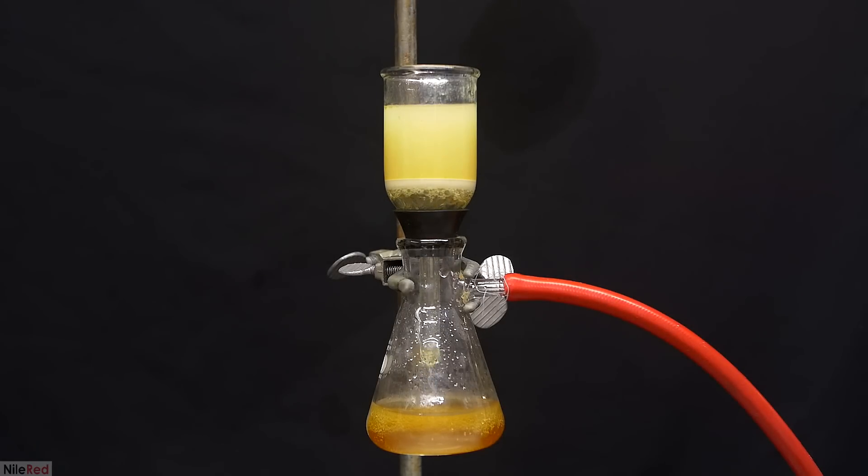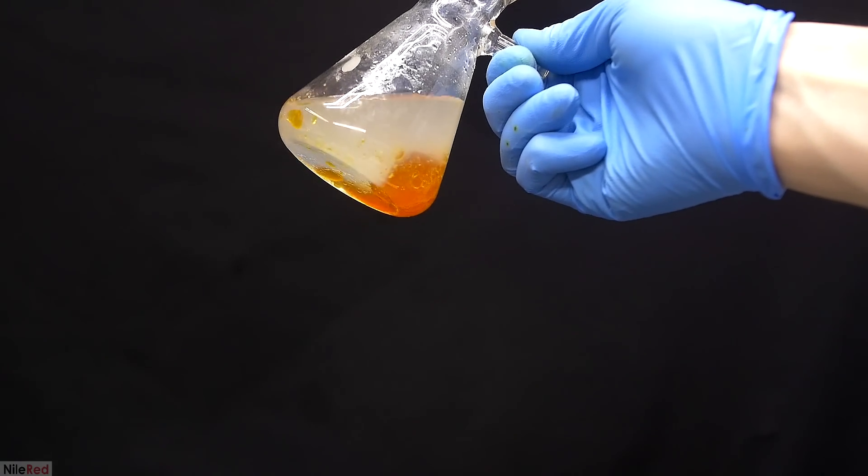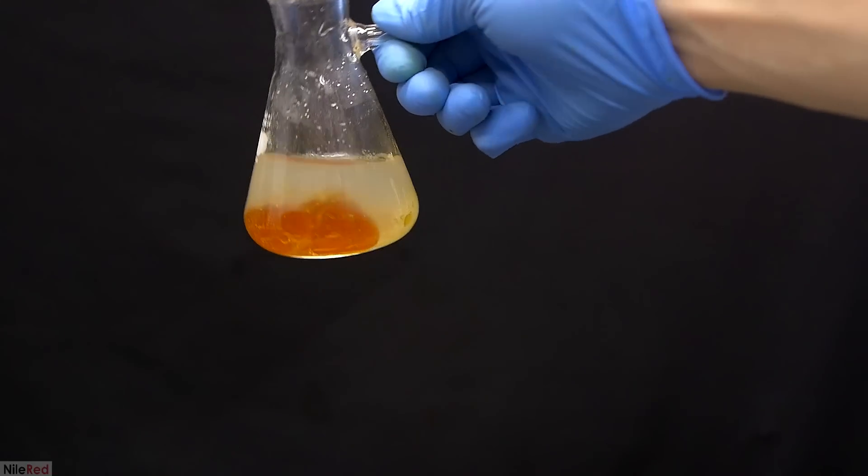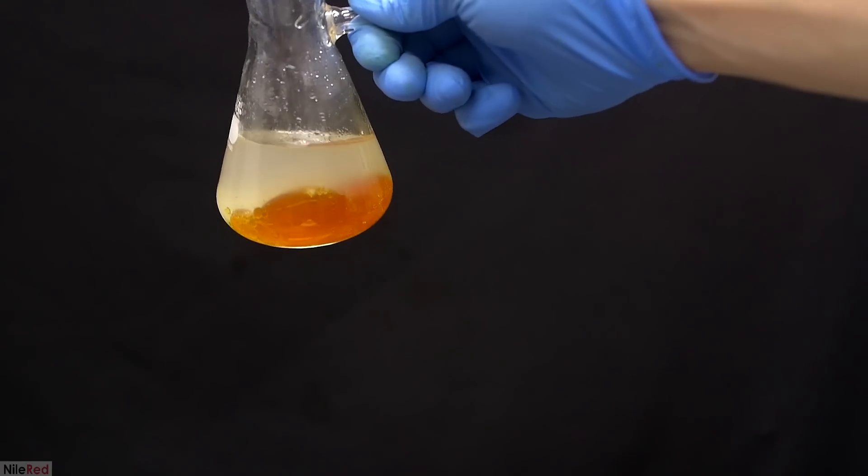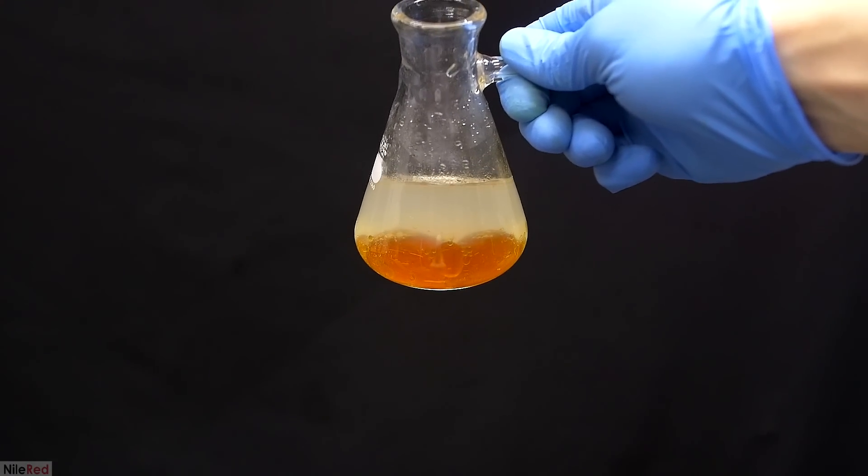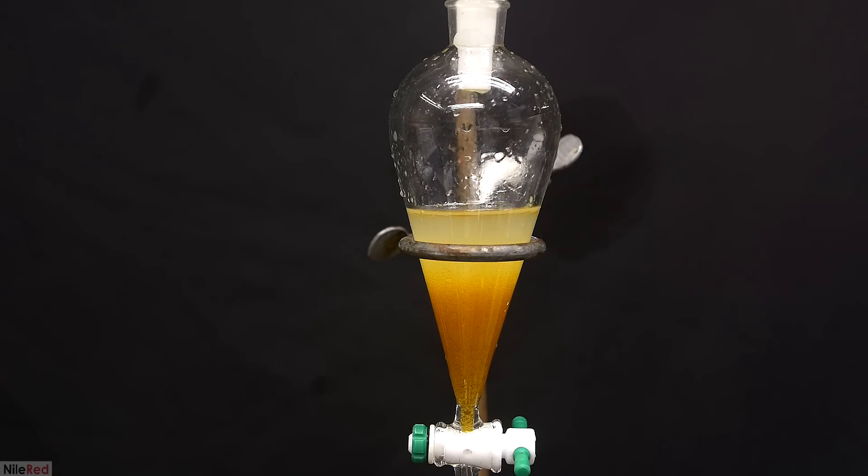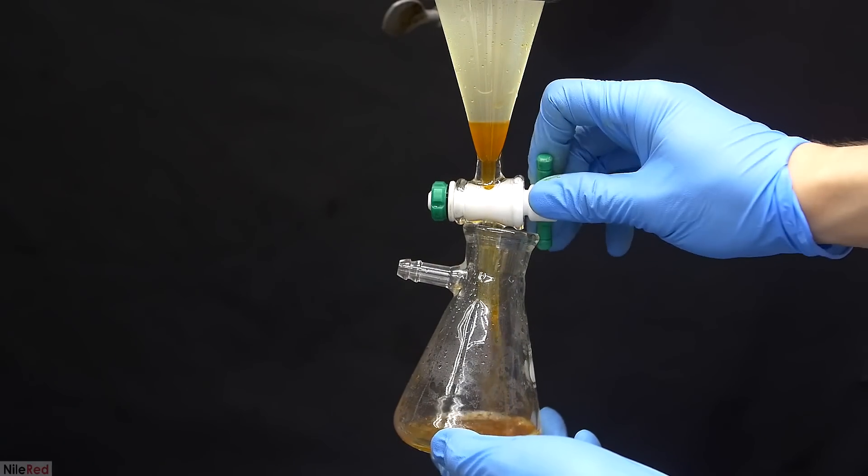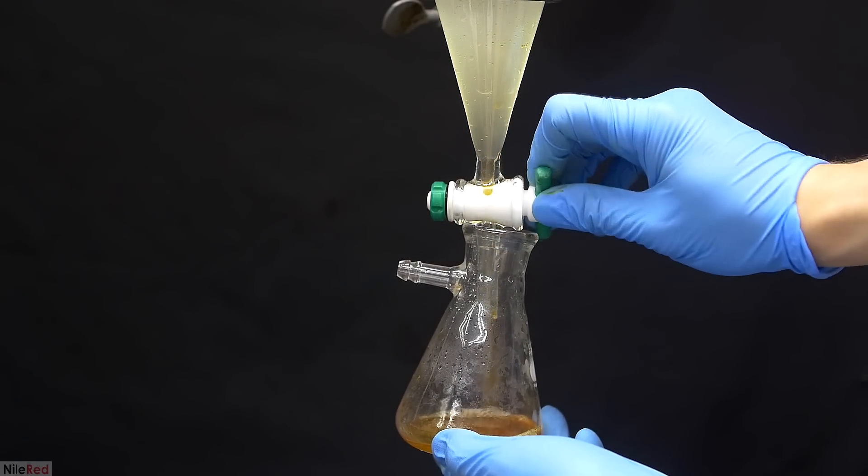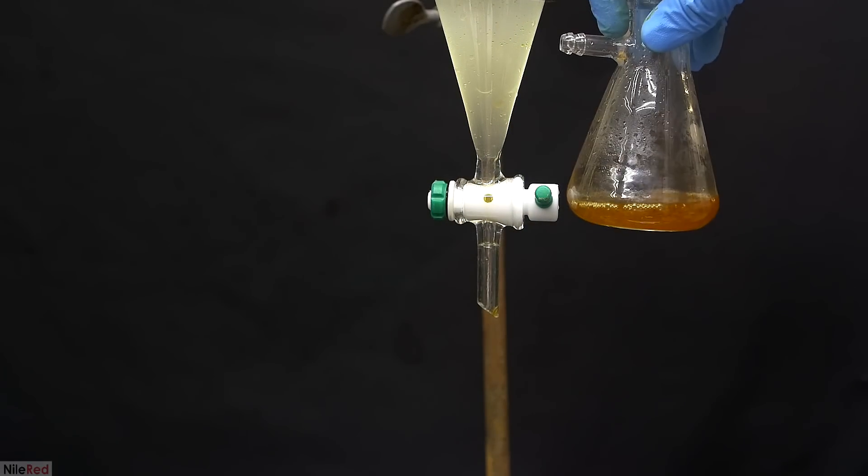After everything had filtered through, the Erlenmeyer flask was washed with a little bit of water. So now in the flask, we again have a mixture of water and oil and we're going to have to separate it using a separatory funnel. Everything is added back to a separatory funnel and I leave it for a bit for the layers to separate. The layers seem to separate pretty nicely and I drained our lower oil layer into an Erlenmeyer flask.